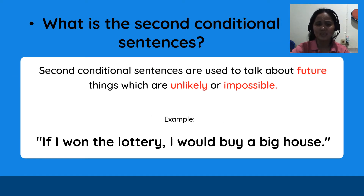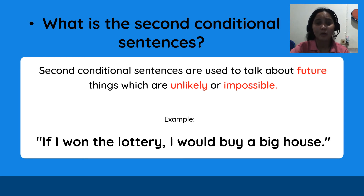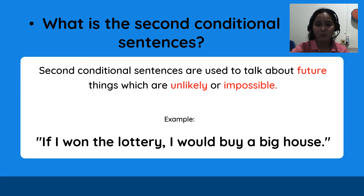What is the second conditional? When we say second conditional sentences, these are used to talk about future things which are unlikely or impossible. Example: if I won the lottery, I would buy a big house.